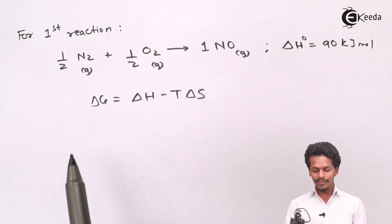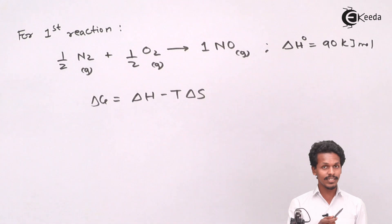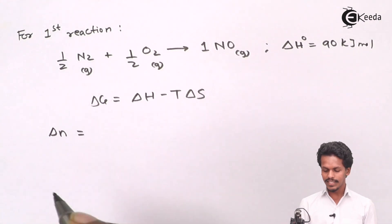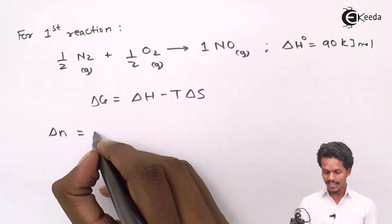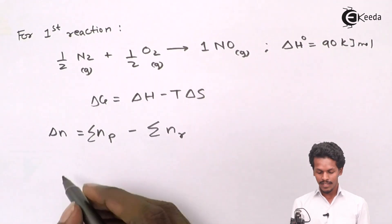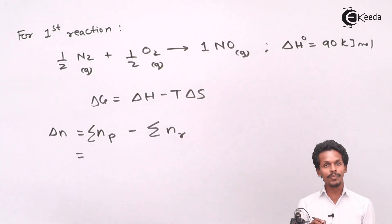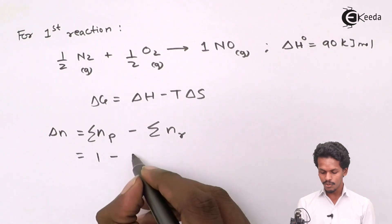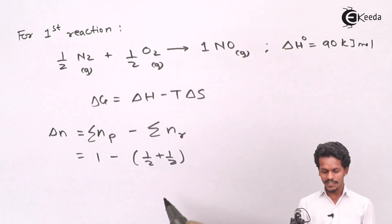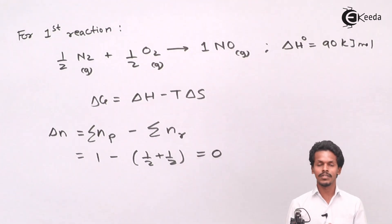We can predict spontaneity by looking at whether the number of moles increases or decreases between reactants and products. The value of ΔN equals the summation of moles of gaseous products minus the summation of moles of gaseous reactants. Here, moles of product = 1, and moles of reactants = half plus half = 1, so ΔN = 1 − 1 = 0. There is no change in number of moles.